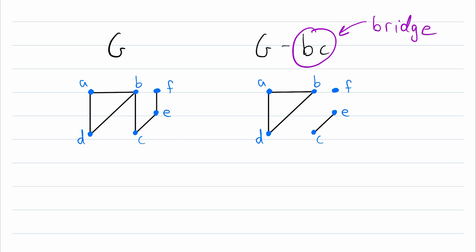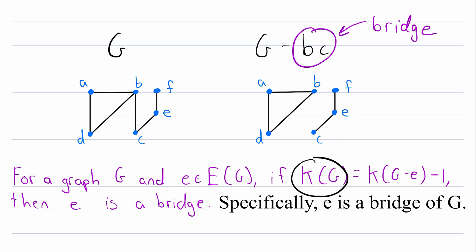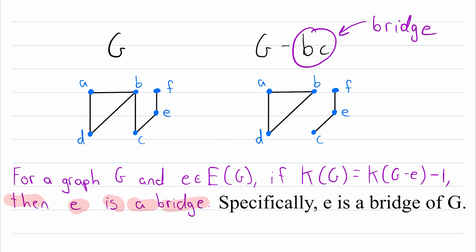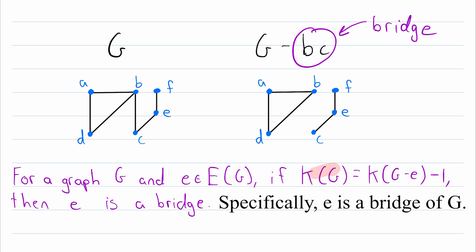Before we delete edge FE we have two components, but deleting it leaves us with three components. So here's a more formal definition of a bridge. The notation κ(G) refers to the number of components in graph G. For a graph G and an edge E in G, if κ(G) equals κ(G minus E) minus one — meaning G has one fewer component than G with edge E deleted — then E is a bridge.